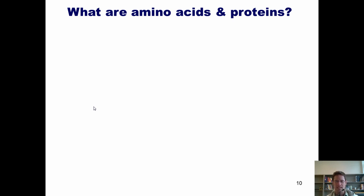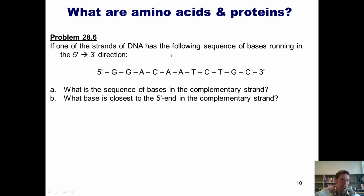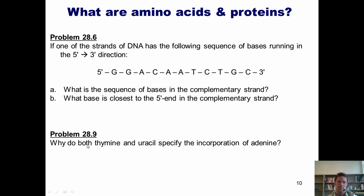So let's see if we can hit some example questions. Here's the first one. If one of the strands of DNA has the following sequence of bases running in the 5' to 3' direction, can you tell me what is the sequence of bases in the complementary strand of DNA? I also want you to tell me what base is closest to the 5' end in the complementary strand. Here's a second question. Why do both thymine and uracil specify the incorporation of adenine? Now, I hate to spoil things for you guys, but I'm actually not going to answer these questions here in this video presentation. For that, you'll have to show up to class.